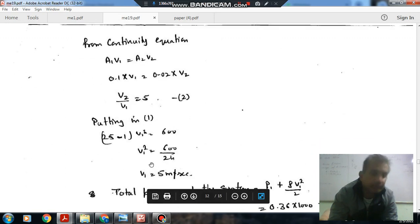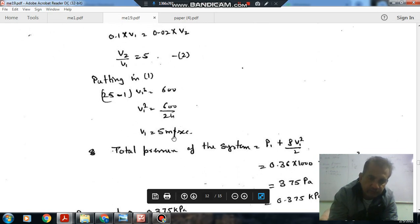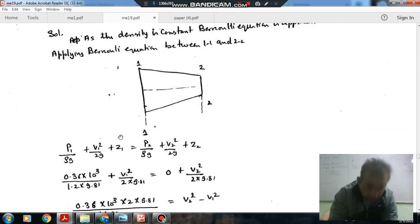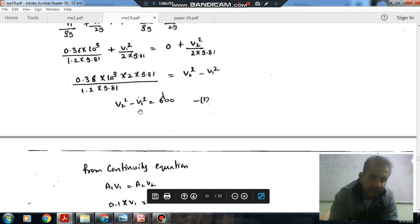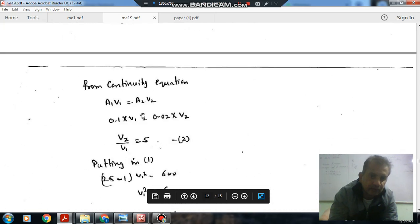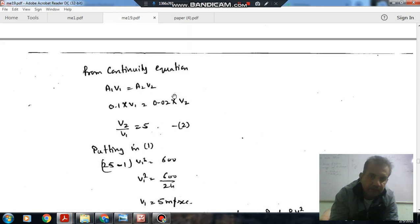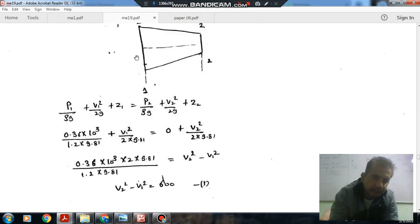We can find out V1 and V2. By putting V2 by V1 as 5, we can find out V1. V1 is 5 meter per second. And pressure at point 1 is 0.36 and velocity is 5. This is the total pressure of the system: pressure plus static pressure plus dynamic pressure.